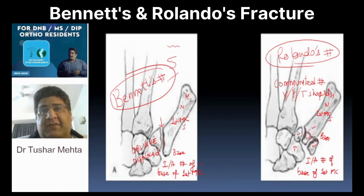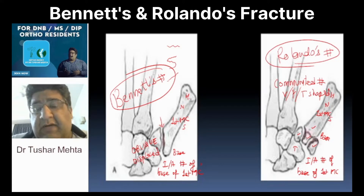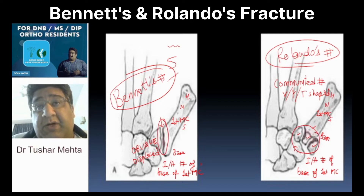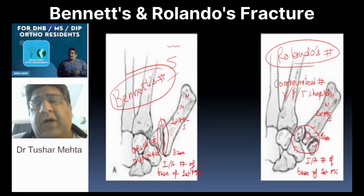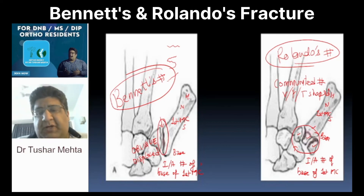To conclude, two fractures of the base of the first metacarpal both have one thing in common: both are intra-articular. What is the difference? If it is oblique and displaced — Bennett. If it is T, V, or Y shaped and comminuted — Rolando. This is how you differentiate Bennett and Rolando, a very frequently asked topic right from your UG to PG entrance. I wish you all the best. Thank you so much.